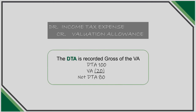A valuation allowance is considered a contra account and offsets the deferred tax asset. In the notes to financials, companies are required to show both the original DTA, the offsetting valuation allowance, and the net asset left to be recognized. It is critical that a company maintain tracking of their DTAs to ensure that a valuation allowance is never recorded, thus negatively impacting the effective tax rate of a company.